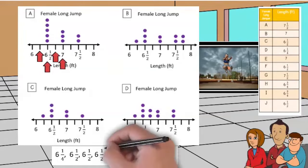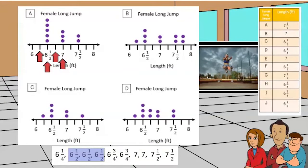It looks like six and one half is the mode or happens the most. We can cross out any dot plots not representing six and a half as the most. All the dot plots show six and one half as the most.